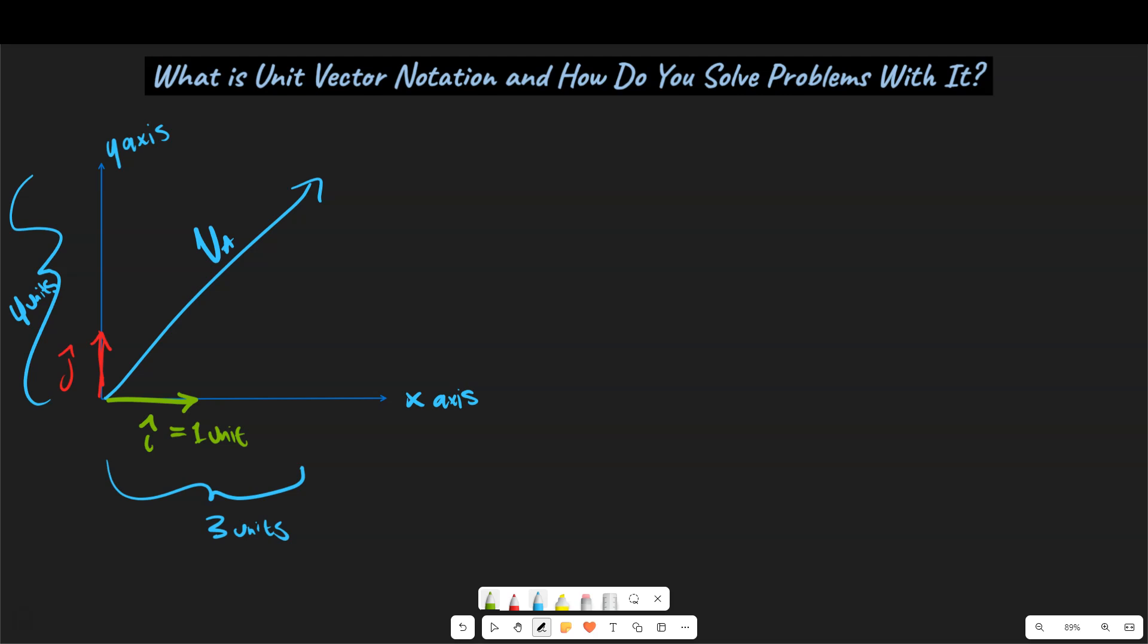And we could say well how could we label this vector? Well we could say vector a is going to be equal to 3 i-hat plus 4 j-hat in terms of vector addition. So you may know that this is a 3-4-5 right triangle. If we made a triangle out of this vector right here where va is the hypotenuse that would be a 3-4-5 triangle. But this in a nutshell is going to be our vector unit notation.